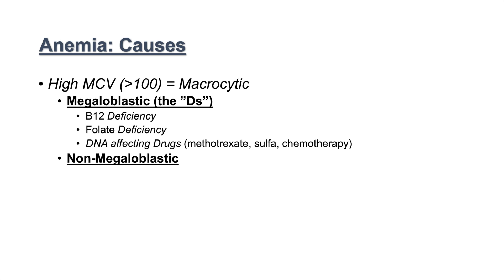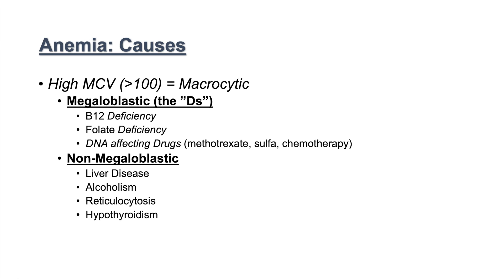If it's non-megaloblastic, think about alcohol. Liver disease — again, often from alcohol. Alcoholism itself leads to a non-megaloblastic macrocytic anemia. Reticulocytosis can lead to a non-megaloblastic macrocytic anemia as well. Another important one not to miss is hypothyroidism — patients can come in with anemia but actually have hypothyroidism. If MCV is high, check TSH levels. Myelodysplasia is also another cause of non-megaloblastic macrocytic anemia.